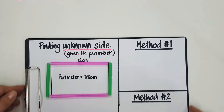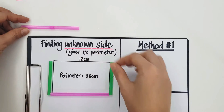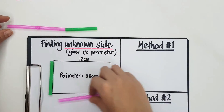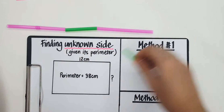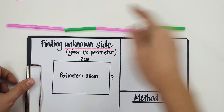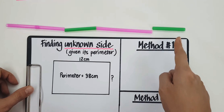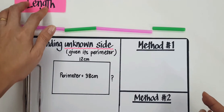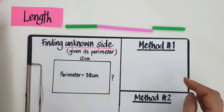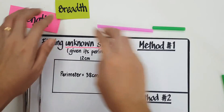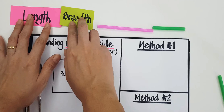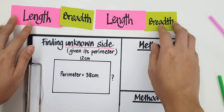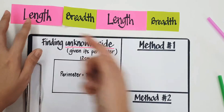I'm going to put them all into a whole line. So I'm going to have the length, plus the breadth, plus the length, plus the breadth. If I add up the length of all these straws, I will basically be getting the parameter.